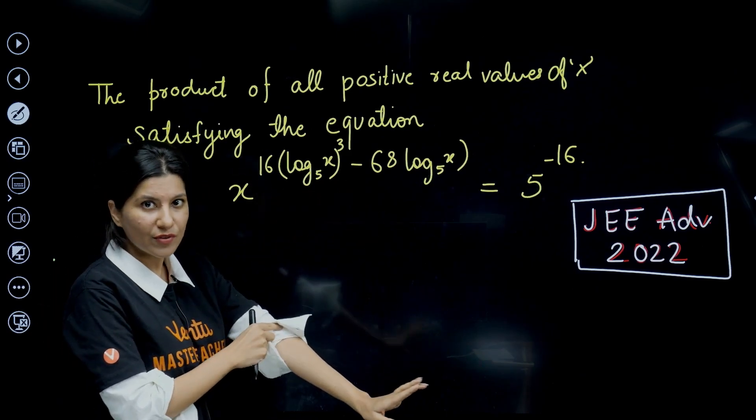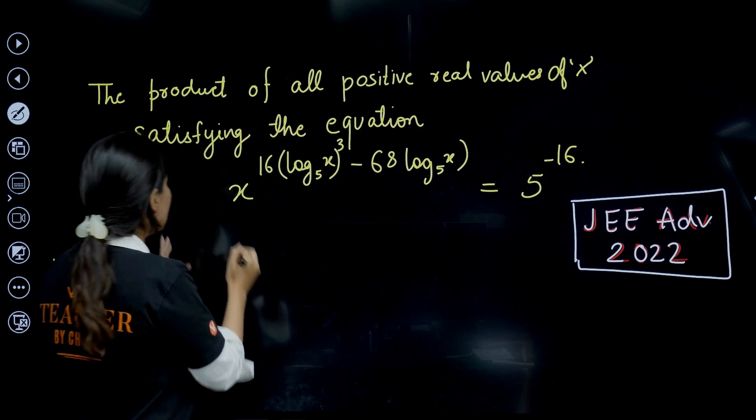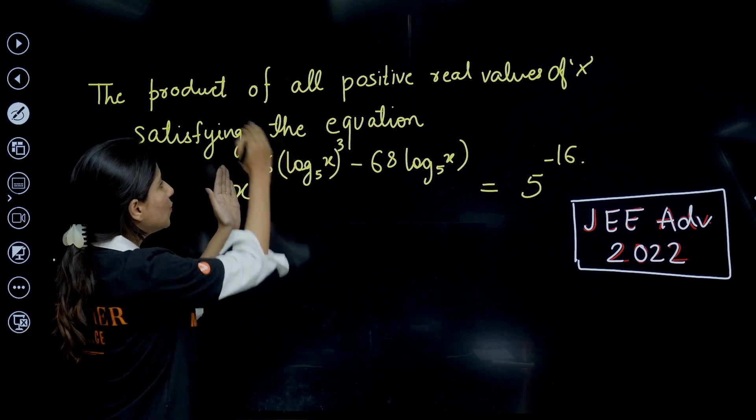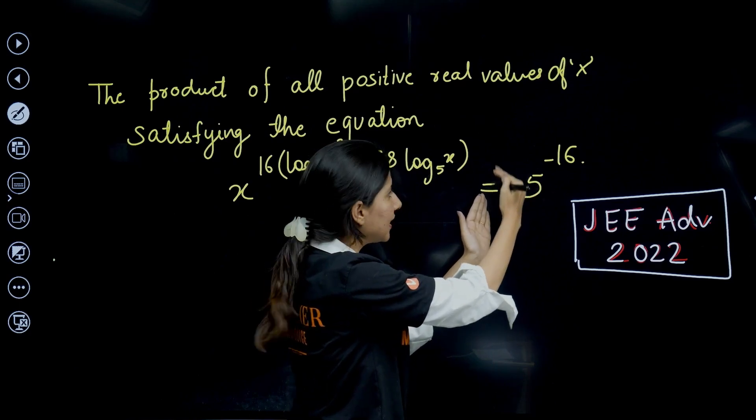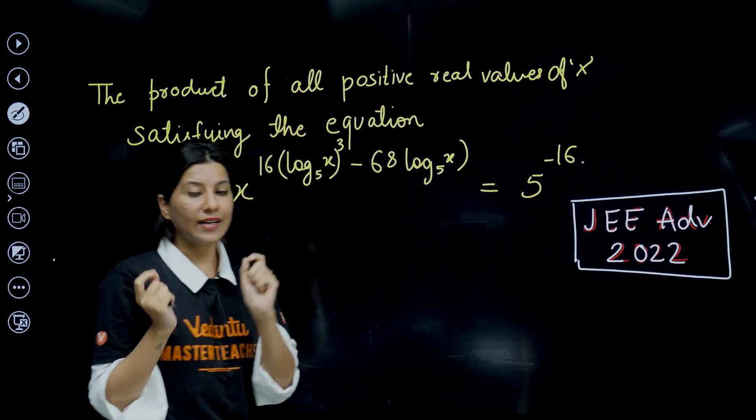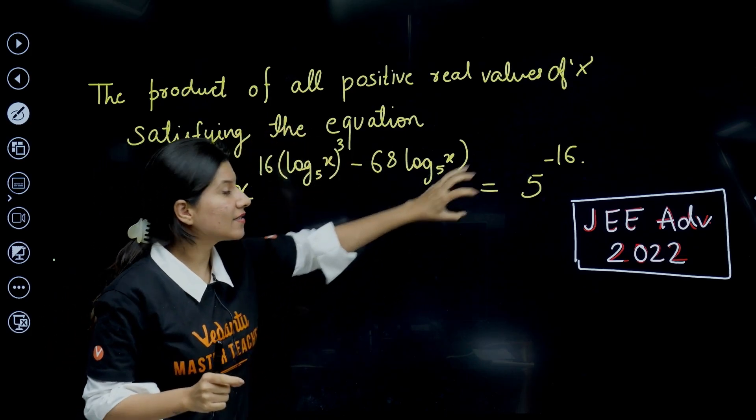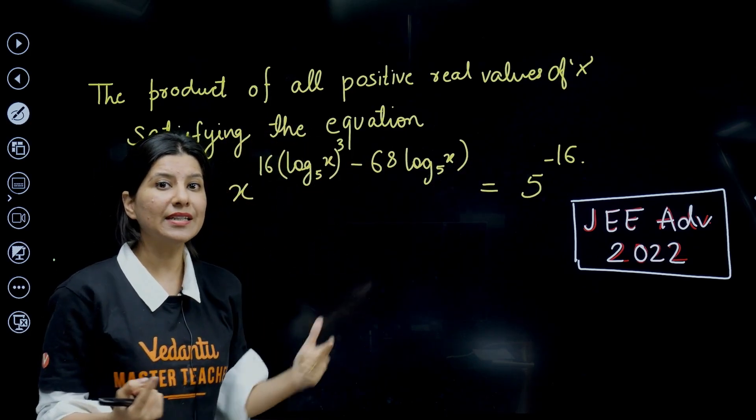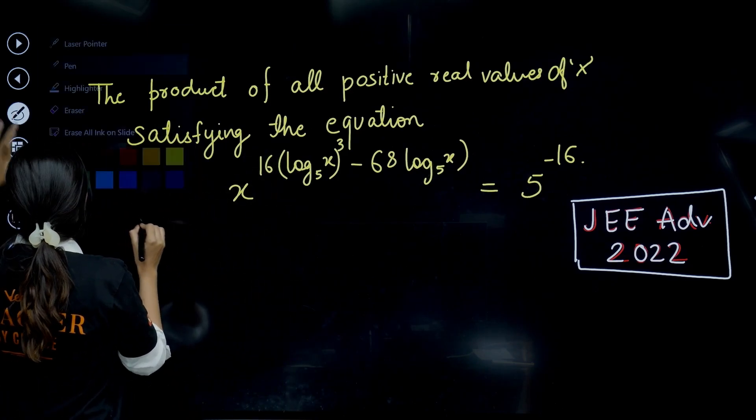The very first thing which we observe is the base of logarithm over here is 5, and also your variable raised to power variable is here. On the right hand side you can clearly see again something raised to power something. I have always told you whenever you see something raised to power something, there is a possibility that you should take logarithm on both the sides.